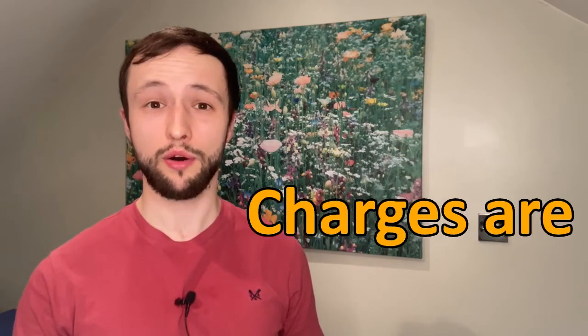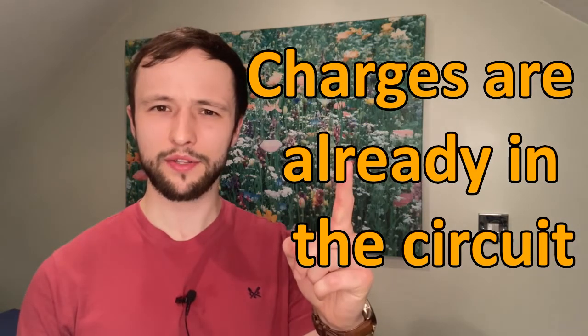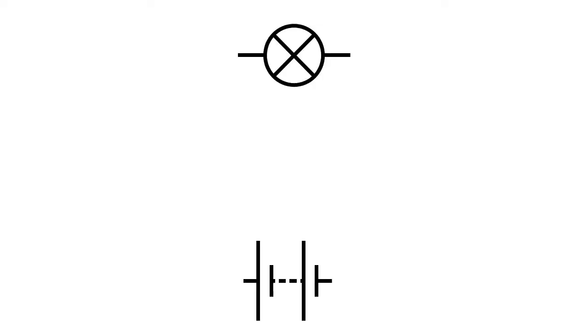Before we talk about the movement of electrons it's important to note that the charges are already in the circuit. Take a look at this little cartoon. Here we have the components for a simple circuit. We have some cells, all together we call them a battery, and a lamp.